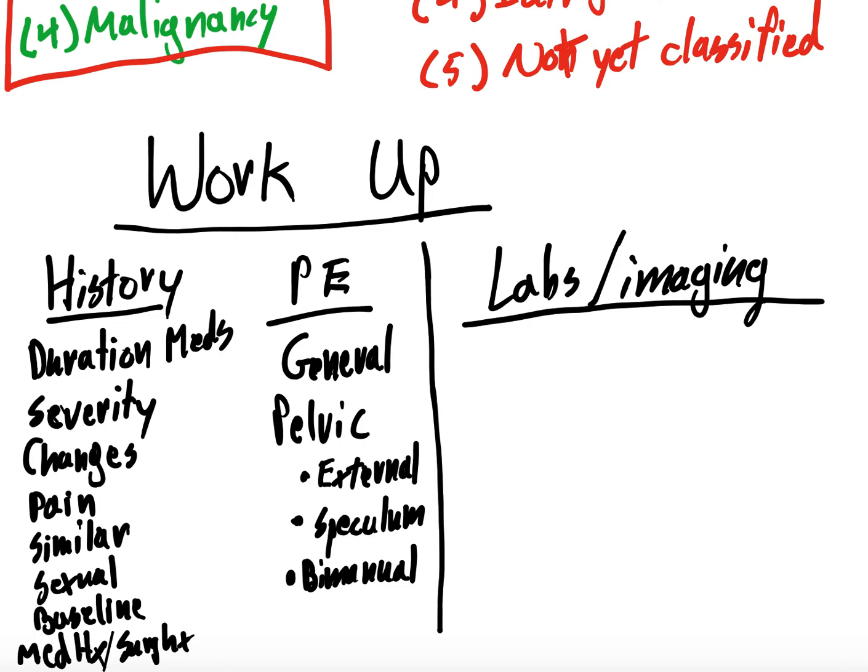So use your history and physical to assign pretest probability. And then your labs and imaging kind of drive what we talked about. So in labs, right, you're going to want to see CBC, see how anemic they are, or if they are anemic. You're going to want coags, right? To see if they are coagulopathic. And then in addition that it depends on what you're concerned about. I mean, if you're concerned about for hormonal endocrine things, things like TSH, cortisol, prolactin levels are all things to think about. And we'll go into that when we talk about each condition. So videos to come.